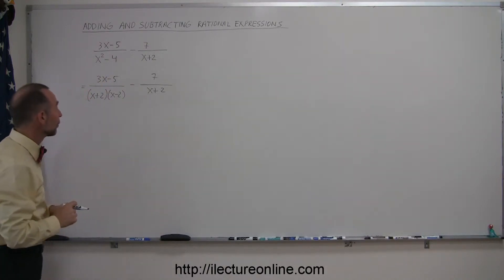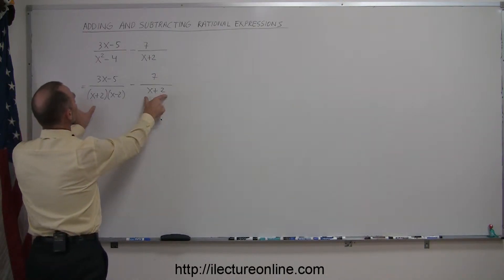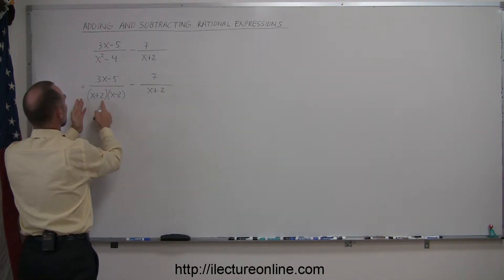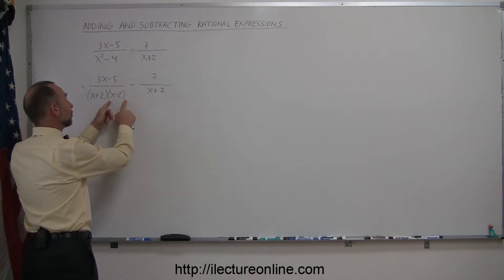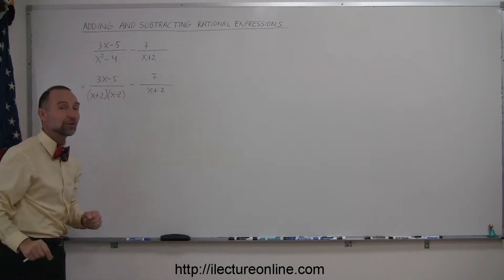Now that you've factored the left denominator, you can see there's some commonality between the two denominators. You have x plus 2 here, x plus 2 there, x minus 2 here, but you don't have x minus 2 there.